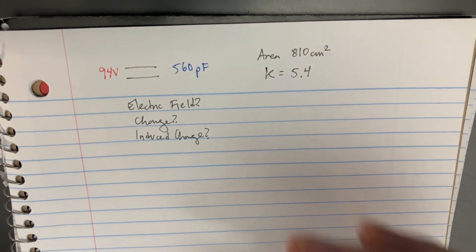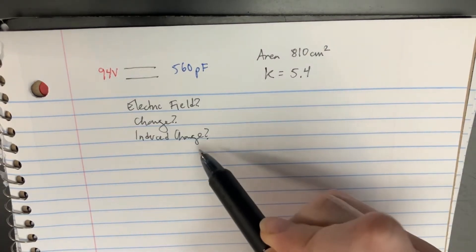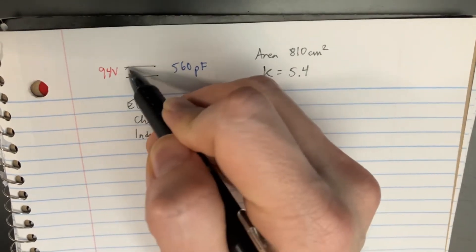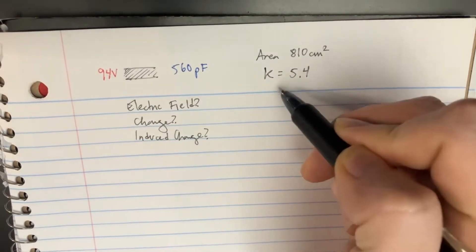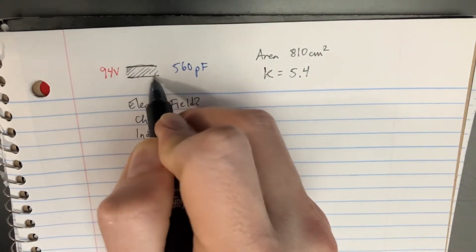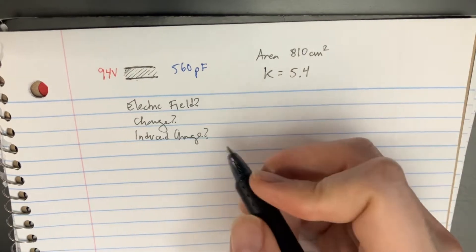In this problem, we're asked to find the electric field, the charge, and the induced charge on this parallel capacitor. It's filled with a dielectric of 5.4, and we know the area on the plates is 810 centimeters squared.